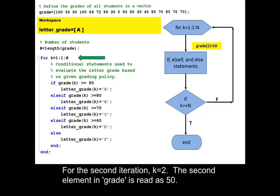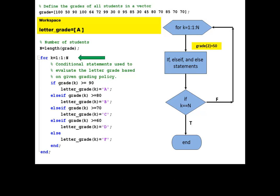For the second iteration, k is equal to 2. The second element in grade is read as 50. Check if 50 is greater than 90. This is found to be false.